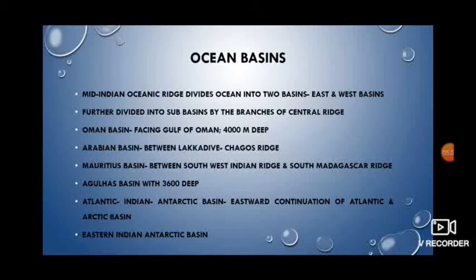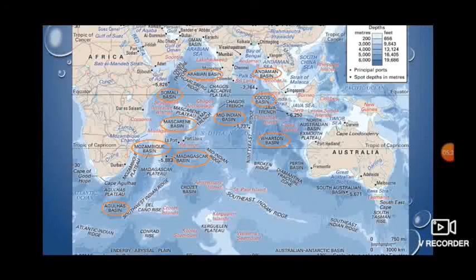The Mid-Indian Oceanic Ridge divides the Indian Ocean into two major basins: the eastern and the western basins. These basins are further divided into several sub-basins by the branches of the Central Ridge. The Oman Basin faces the Gulf of Oman and is spread over the extensive continental shelf with an average depth of 3,600 meters. The Arabian Basin is located almost in a circular shape between the Lakshadive-Chagos Ridge, with an average depth of 3,600 to 6,000 meters.